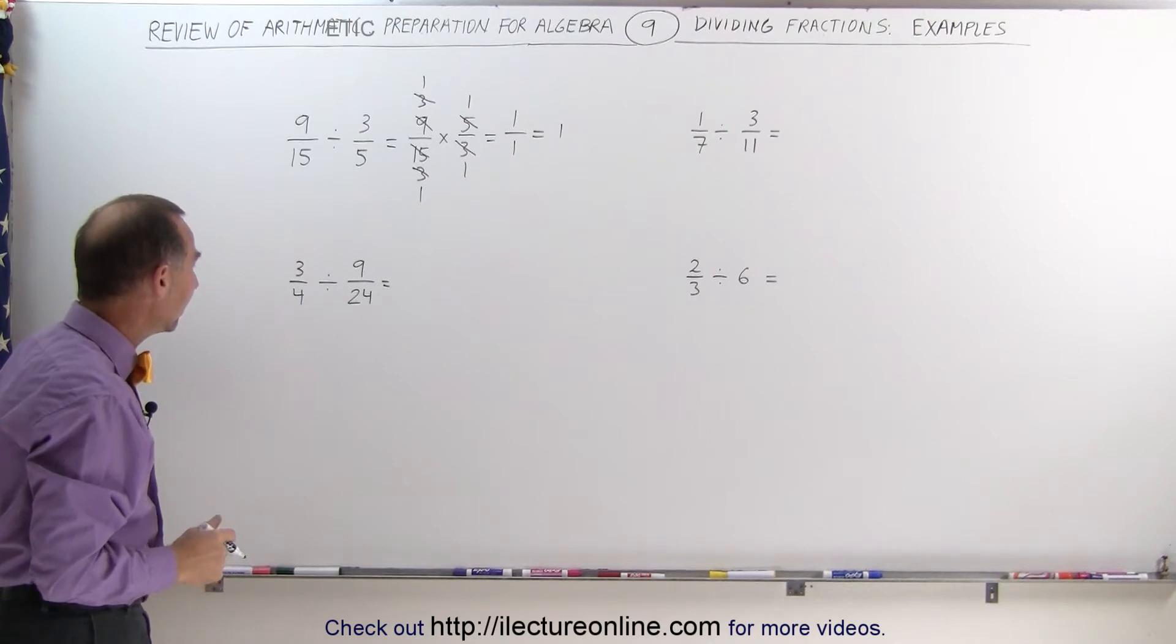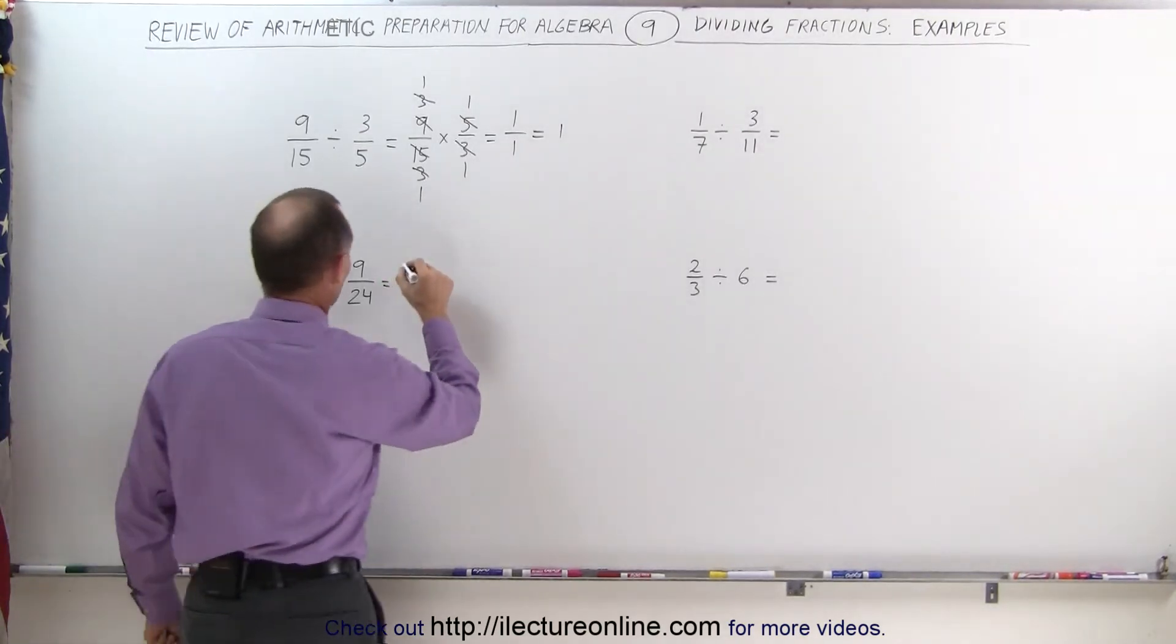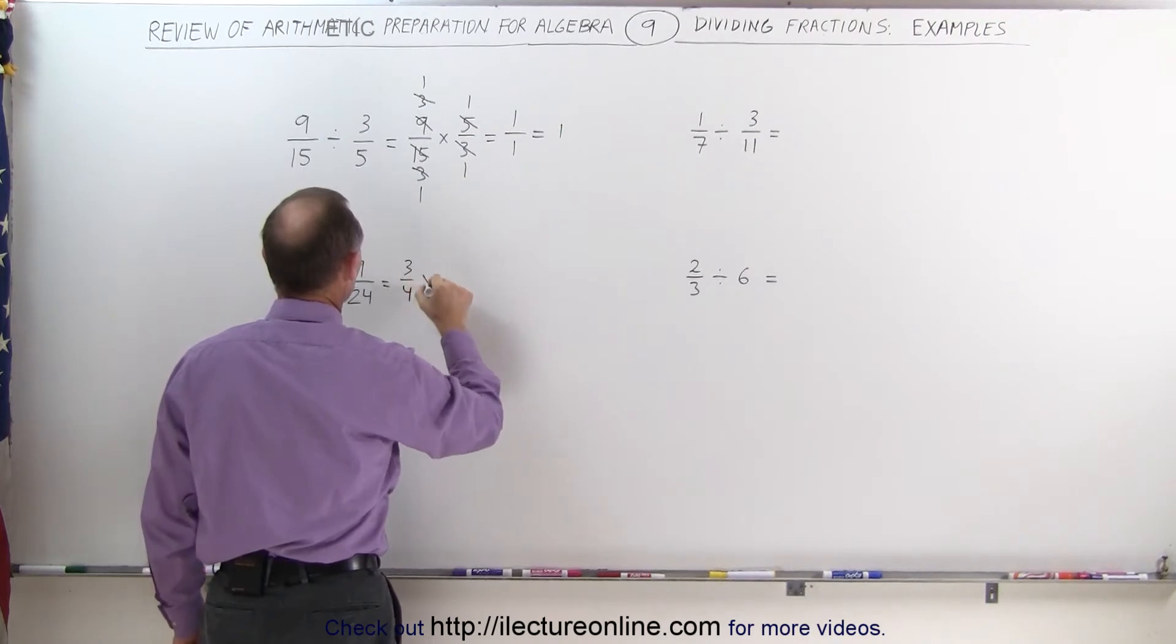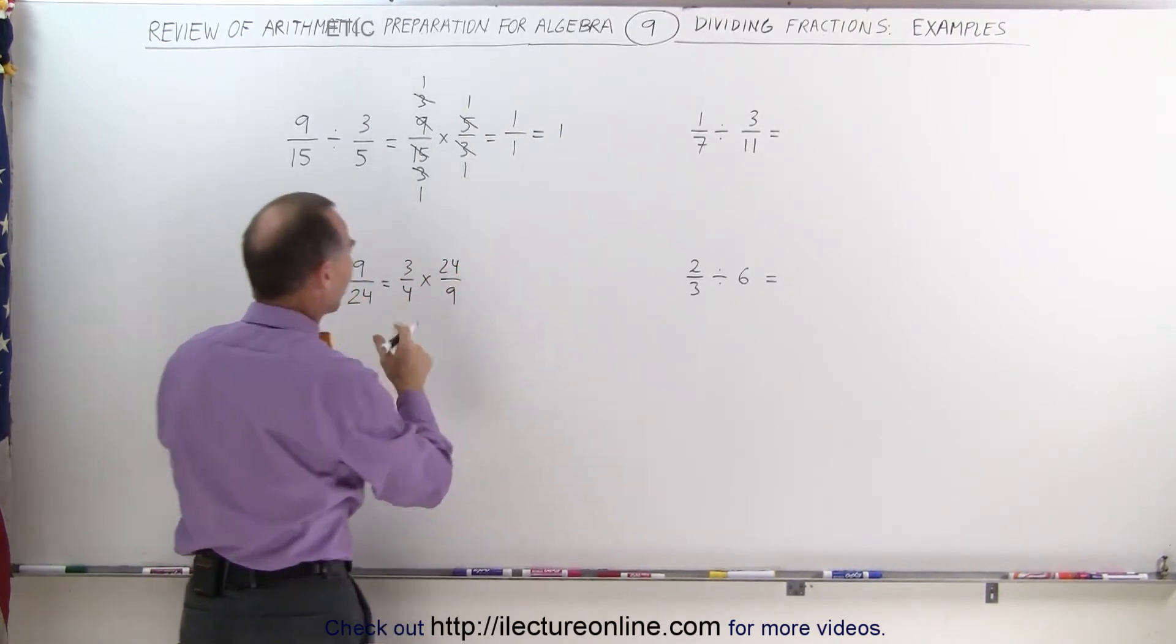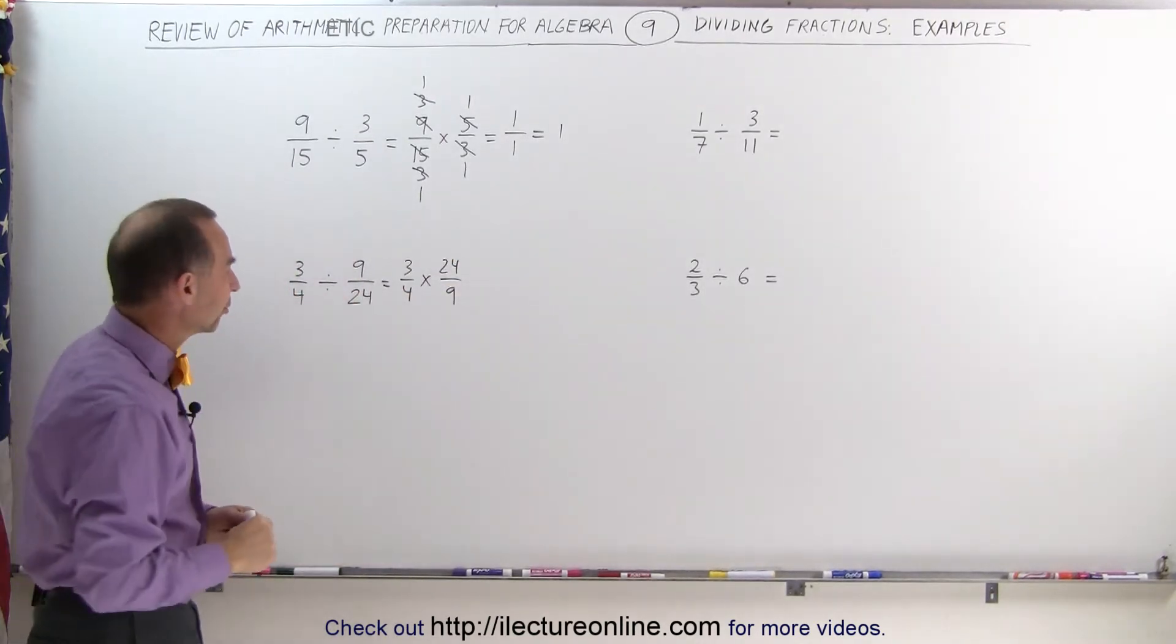Let's try this one here. Again, dividing by fractions, same as multiplying by its inverse, 3/4 multiplied times 24 over 9. And again, before you multiply the numerators together and the denominators together, you want to simplify as much as you can.